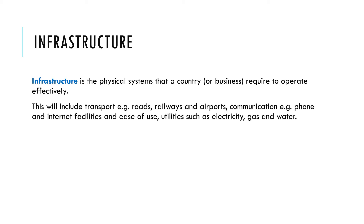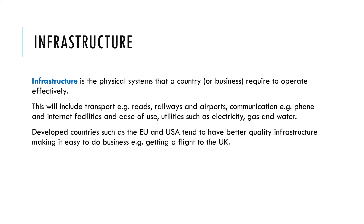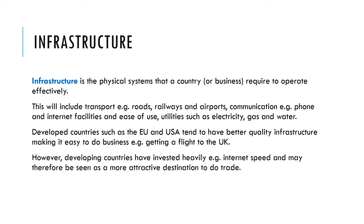Our third category is infrastructure — the physical systems that a country or business requires to operate effectively. This includes things like roads, railways, airports, phone and internet networks, and utilities such as electricity, gas and water. Developed countries such as the EU and the USA tend to have better quality infrastructure, making it easier to do business. However, many developing countries are investing heavily in their infrastructure — for example, many now have high-speed internet — making them increasingly attractive destinations as markets.